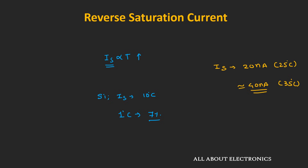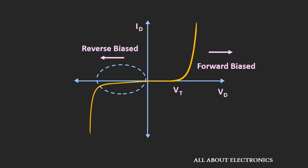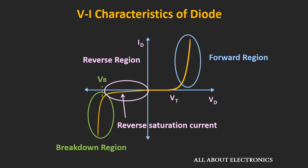This reverse saturation current does not change much even if we increase the reverse voltage. However, there is a limit on the maximum reverse voltage that can be applied to a p-n junction. If we continuously increase the reverse voltage, we reach a point known as the breakdown voltage. Once the breakdown voltage is reached, suddenly a large number of minority carriers appear in the depletion region and the diode conducts very heavily. We will see in the next video what happens to the p-n junction diode when it is operated in this breakdown region. Whenever the diode is operated in reverse bias, the applied voltage should be kept below this breakdown voltage.